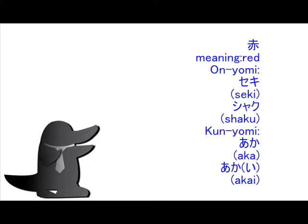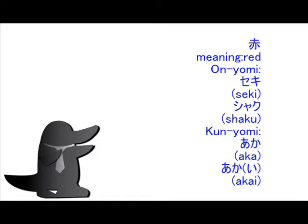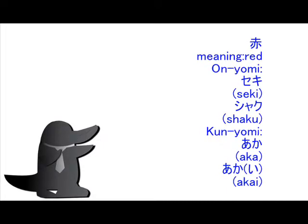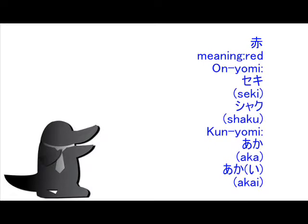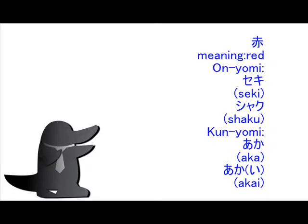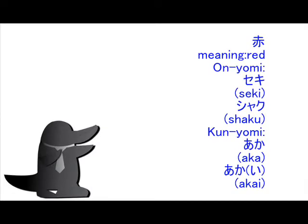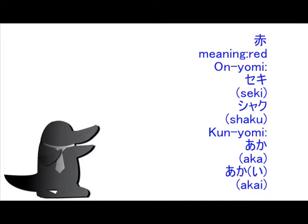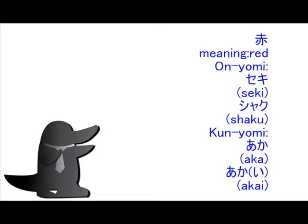In kunyomi writing, you can read: aka, akai. The 'i' in akai is okurigana.